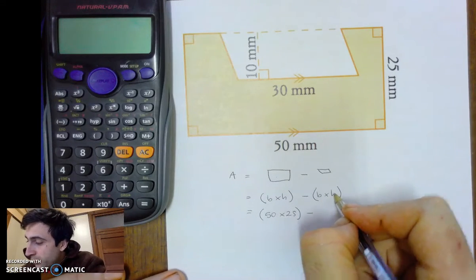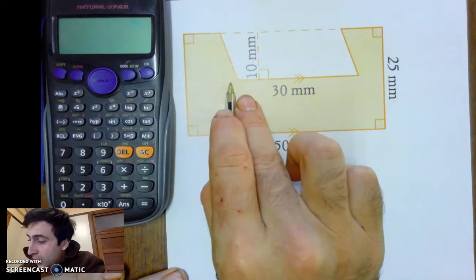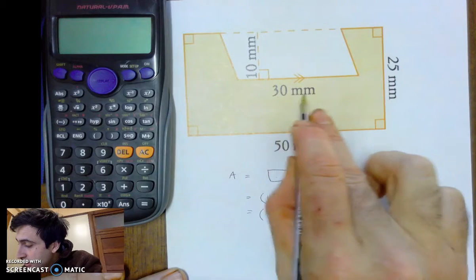Base of the parallelogram, we look for the right angle. Oh, there it is. Base of the parallelogram, therefore, is 30 millimetres. Height is 10. 30 by 10.